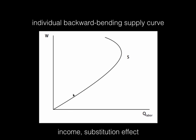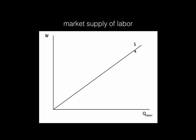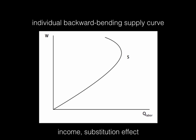In the upward-sloping portion, the substitution effect dominates the income effect. But at a high enough wage, the income effect dominates and the person wants to work fewer hours, creating a backward-bending supply curve. However, for the market supply curve, someone new is always willing to enter the market at a higher wage, so we can just draw market supply as upward sloping without worrying about backward bending. This is a good example of income and substitution effects appearing in various economics applications.